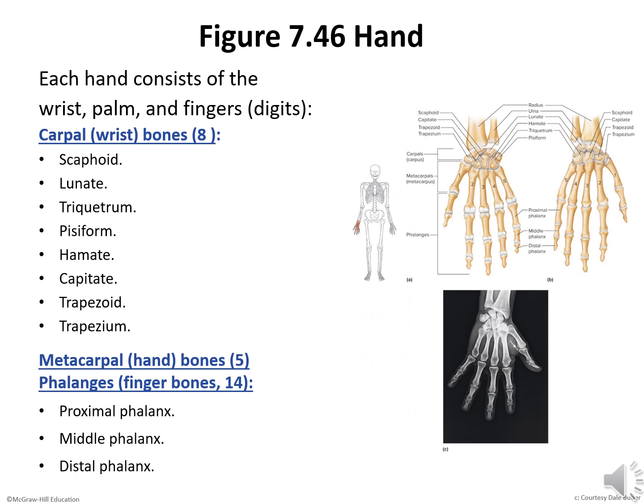The hand is made up of the wrist, palm, and fingers. The skeleton of the wrist consists of eight small carpal bones in two rows of four bones each. The resulting compact mass is called the carpus. The carpus is rounded on its proximal surface where it articulates with the radius and with the fibrocartilaginous disc on the ulnar side. The carpus is concave anteriorly, forming a canal through which tendons and nerves extend to the palm. Its distal surface articulates with the metacarpal bones.